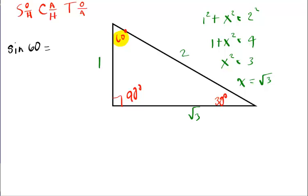So, the sine is going to be opposite over hypotenuse. Opposite, in this case, is the square root of 3. The hypotenuse is 2. There's your sine of 60.